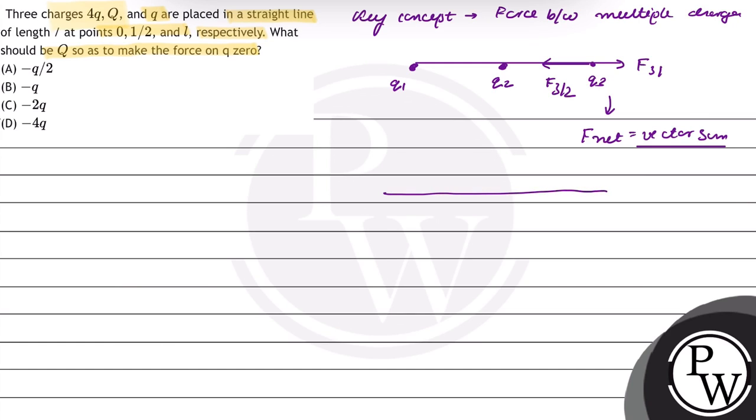In this question we are given three charges that are placed at point 0, 1 by 2, and 1 respectively. The charges are 4Q, Q, and small q.